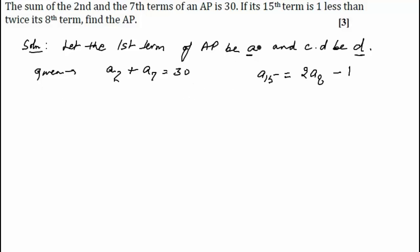Now with the first term a and common difference d, we just put the values: a plus (n minus 1)d. That is (2 minus 1)d plus a plus 6d equals 30. Opening up the bracket: 2a plus 7d equals 30. Let this be the first equation.